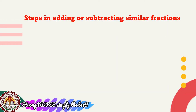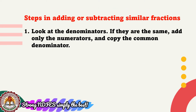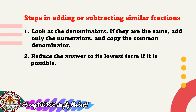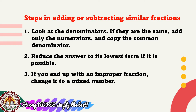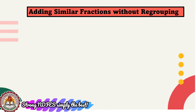How do we add or subtract similar fractions? Here are the steps: Number 1, look at the denominators — if they are the same, add only the numerators and copy the common denominator. Number 2, reduce the answer to its lowest term if possible. Number 3, if you end up with an improper fraction, change it to a mixed number. Let us have an example of adding similar fractions without regrouping.